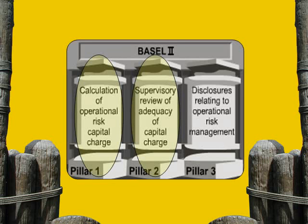Pillar three is about disclosure relating to operational risk management. Basel wants to make sure that all banks are disclosing information in a sufficient and effective way.